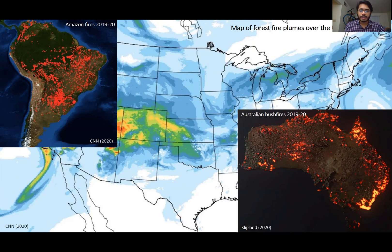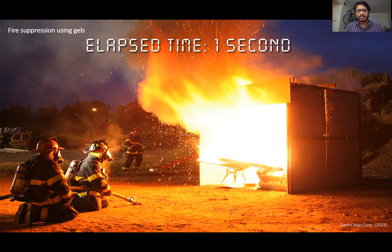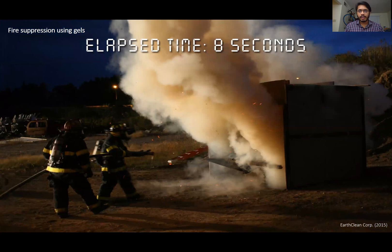Efforts have been made by many companies to enhance fire suppression and prevention techniques, one of which is shown here by Earth Clean Corp, with whom our lab also collaborated in the past. Here we see firefighters testing gel-based fire suppressants, which are essentially yield stress fluids on some burning wood. Within a very short time the fire seems to be getting under control by the virtue of using these gel-based fire suppressants and within as little as eight seconds the fire is completely out.